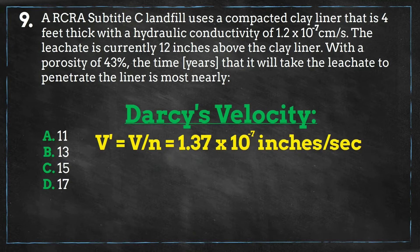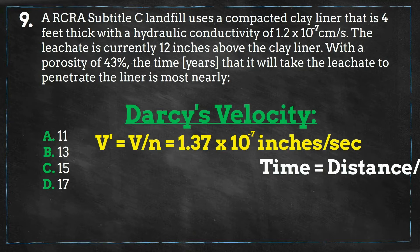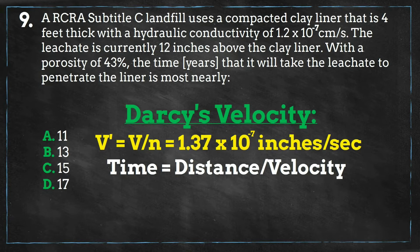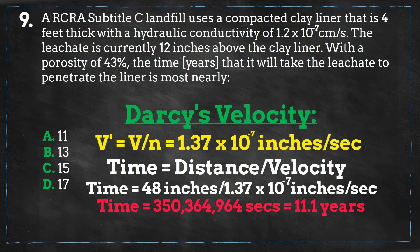Now that we have the actual velocity, we can find how long it will take the leachate to penetrate the liner. Velocity is distance over time, so time equals distance divided by velocity. Using the thickness of the liner — 48 inches — and our velocity of 1.37 times 10 to the negative 7 inches per second, we get an answer of over 350 million seconds, which converts to 11.1 years, closest to answer A.